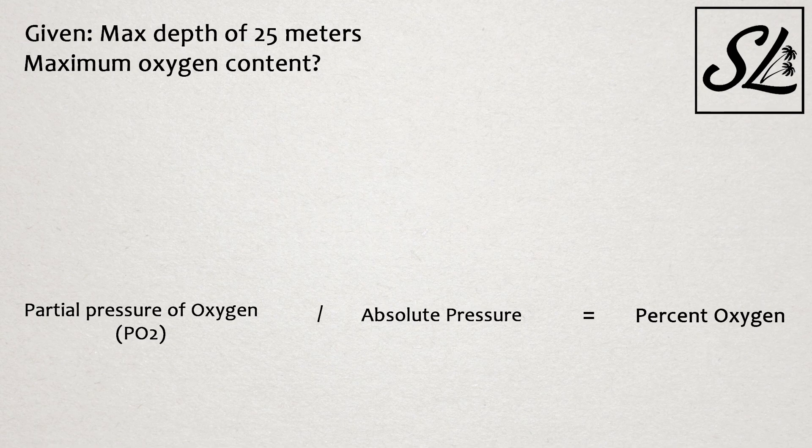But now, where do we get those numbers? Well the partial pressure of oxygen, or PO2, is 1.4 atm. We will use this same number every time when making nitrox calculations. Partial pressure is found through a formula under Dalton's Law, which we will talk about in a later video.